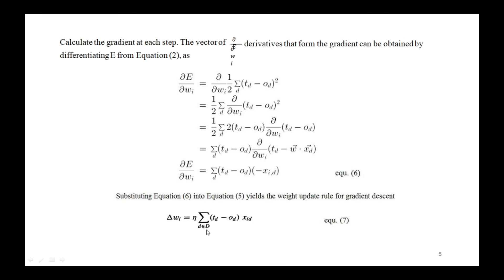Here, capital D indicates the set of training examples, and small d indicates a particular training example. These are the different derivative steps which represent the weight update rule for gradient descent.